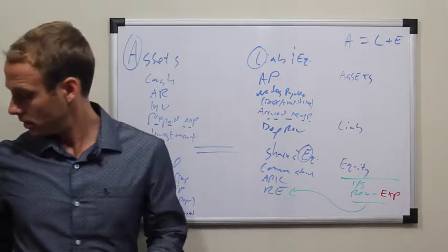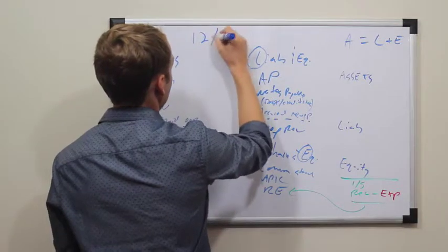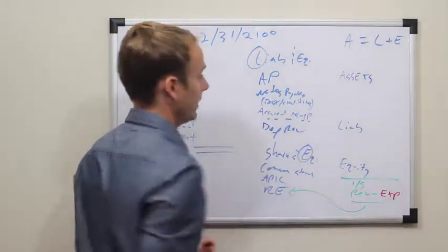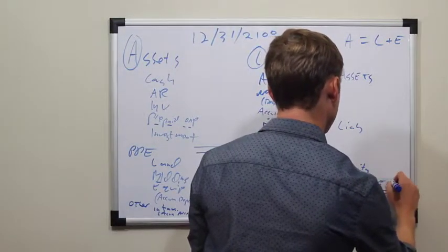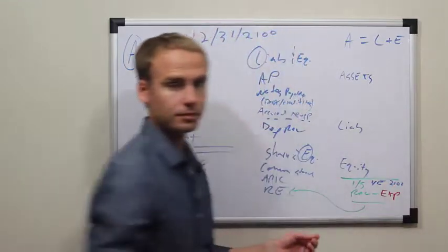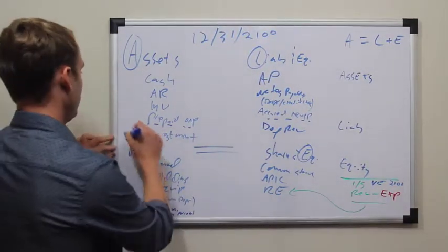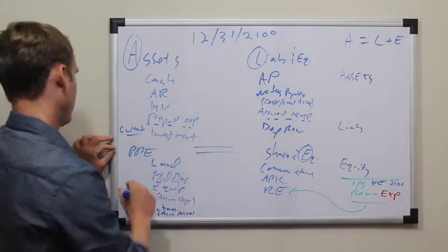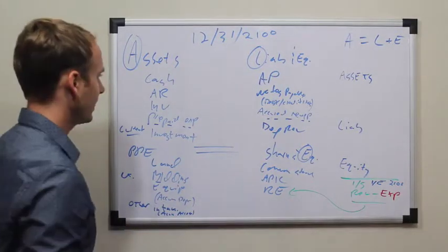The balance sheet is at a point in time, as discussed earlier. 12/31/2100. Income statement, this might be the year-ended 2100. These are going to be current, and these are going to be more long-term depending on the business.